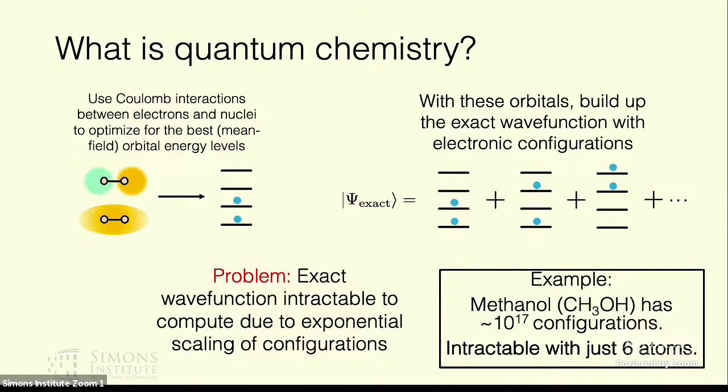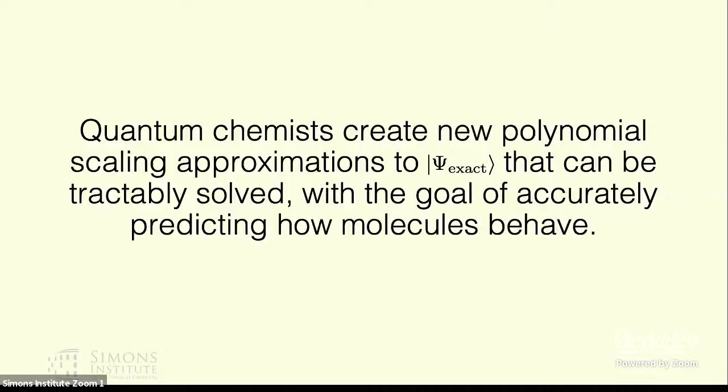For example, even just a tiny molecule of methanol has upwards of 10^17 configurations of electrons even in a medium or small size basis set. So that's intractable with just six atoms. In general what quantum chemists do is create new polynomial scaling approximations to the exact wave function of interest that can be tractably solved with the goal of still capturing all the accuracy of the exact wave function in being able to predict new properties of some arbitrary system.